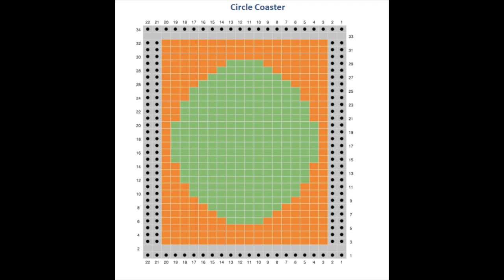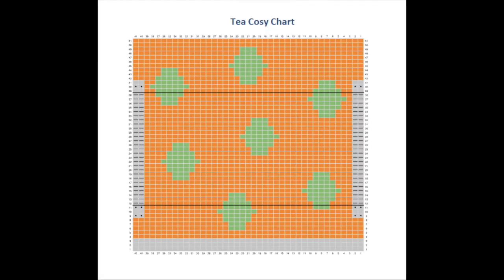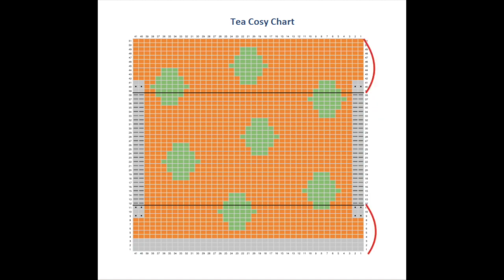We've got charts in this project that deal with working in the round, and we've also got charts that deal with working flat. For example, the coaster is worked completely flat. The tea cosy has got elements of working in the round and also flat. When you're working in the round, you will always read your chart from right to left — every round will be read from right to left.